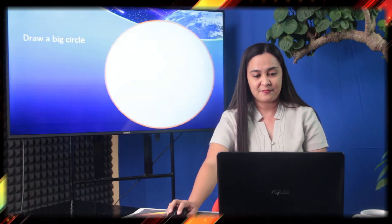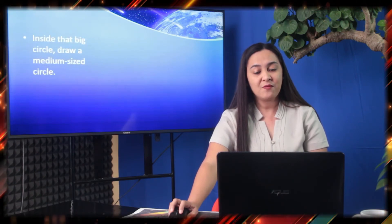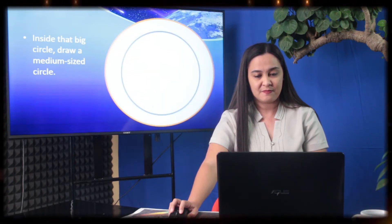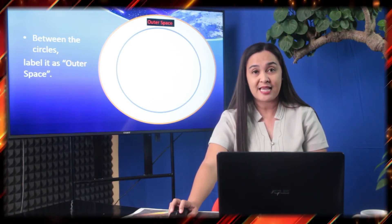Now that you have learned what a meteoroid, meteor, and meteorite are, get your pen and paper again. We will do another activity called Place Me Where I Belong. Let's make our diagram. On your paper, I would like you to draw a big circle. After that, inside that big circle, draw a medium-sized circle. In between the space of the big circle and medium circle, label it as outer space.